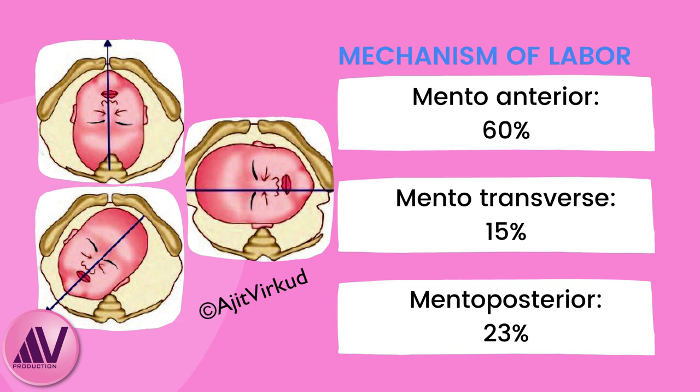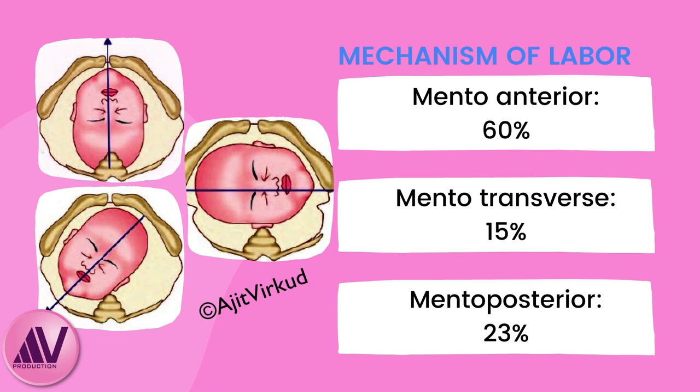Vaginal delivery is possible in many cases. Fortunately, the mentum is anterior in over 60% of cases of face presentation, transverse in 10–12% of cases, and posterior only 20–25% of the time. Fetuses with the mentum transverse position usually rotate to the mentum anterior position, and 25–33% of fetuses with mentum posterior position rotate to a mentum anterior position. When the mentum is posterior, the neck, head and shoulders must enter the pelvis simultaneously, resulting in a diameter too large for the maternal pelvis to accommodate unless in the very preterm or small infant.